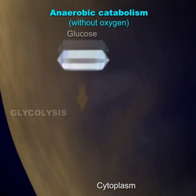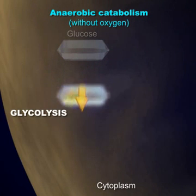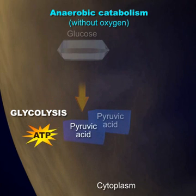The first step of carbohydrate catabolism is glycolysis, and it occurs in the cytoplasm of human cells. Glycolysis is an anaerobic process.